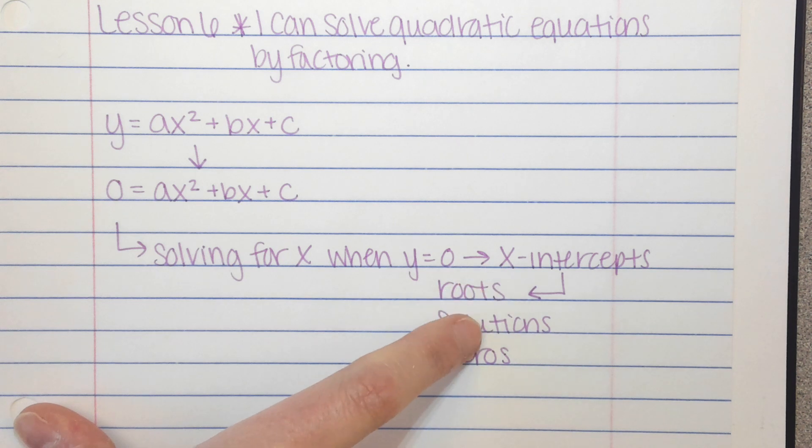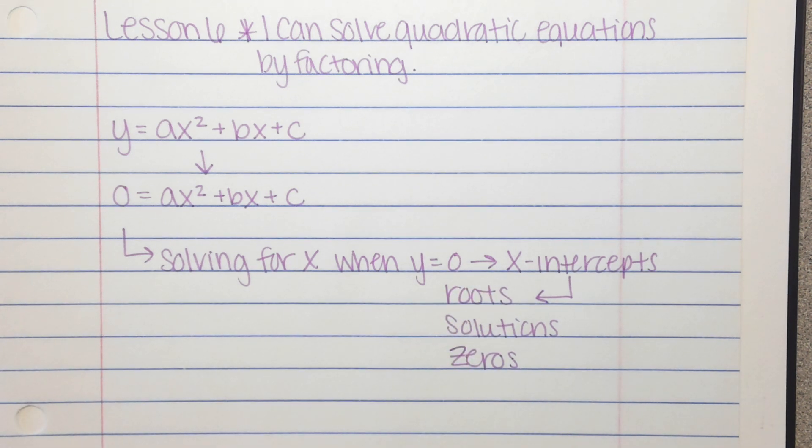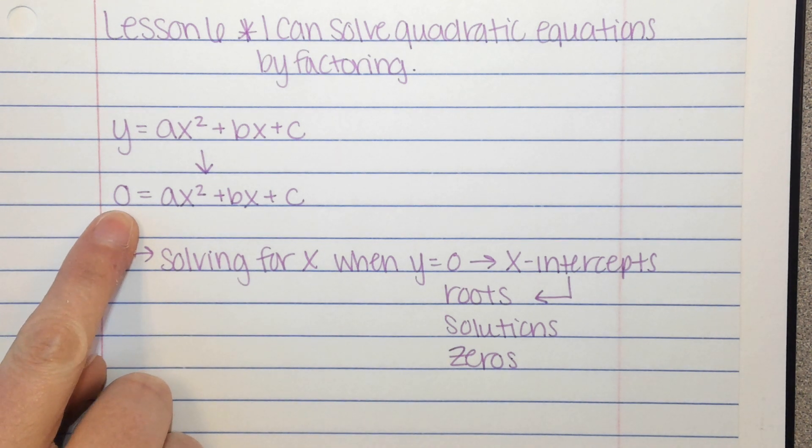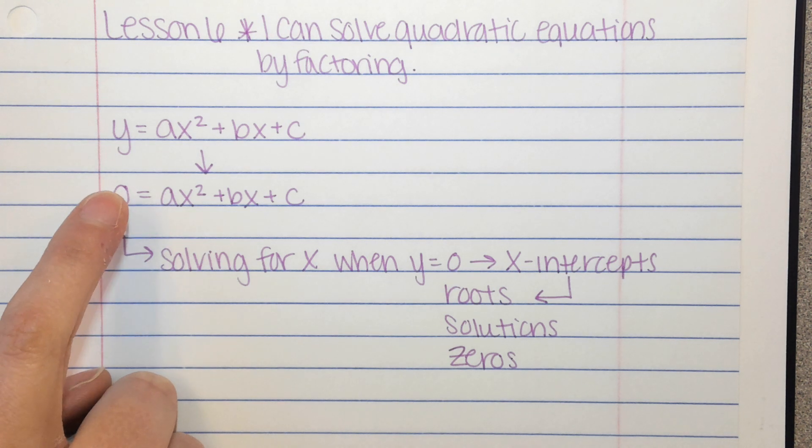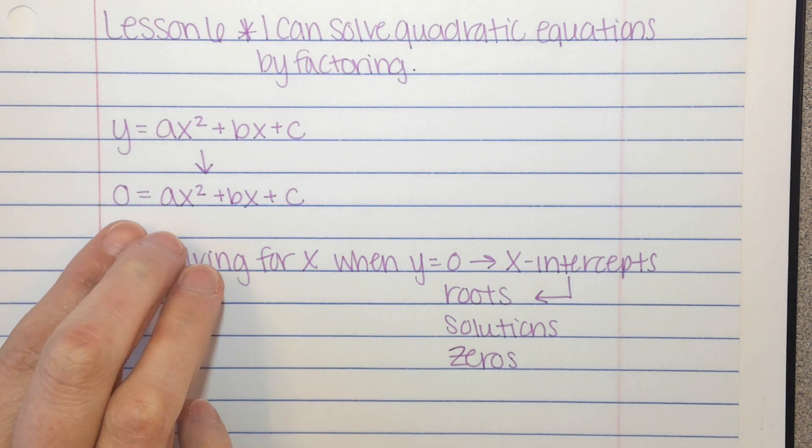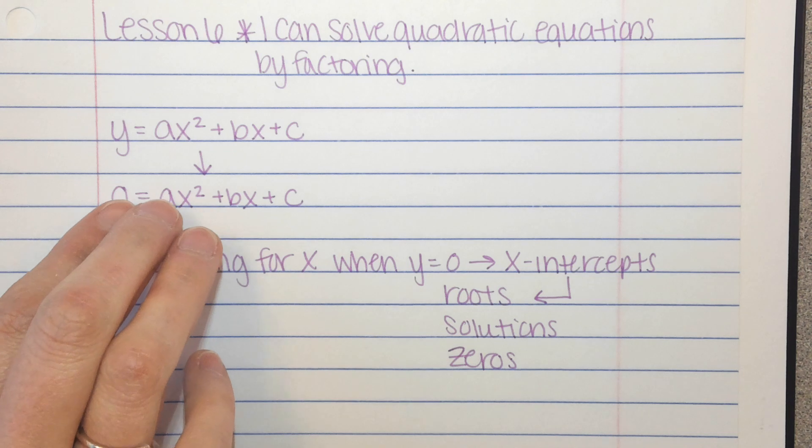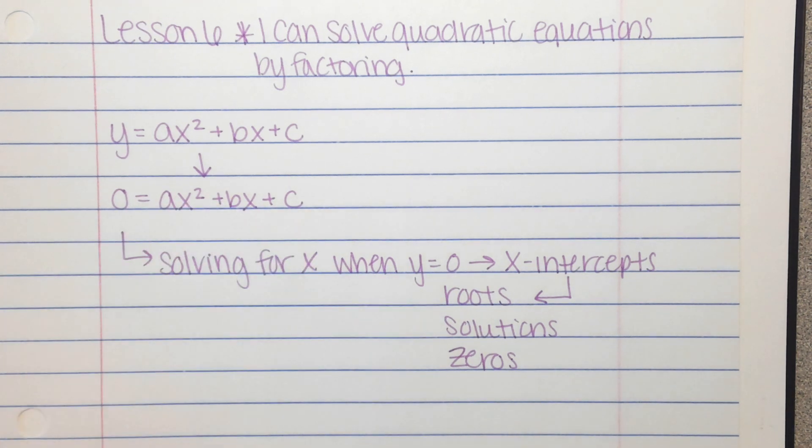So all of those terms are interchangeable, and it means the same thing. You're solving the quadratic equation for the variable, and when you're solving a quadratic equation, it has to be set equal to 0. If this is not a 0, you can't solve it.